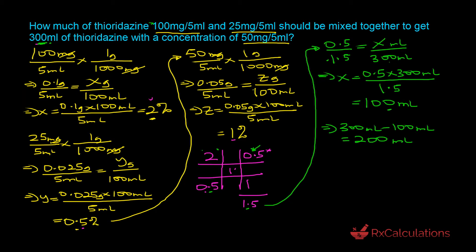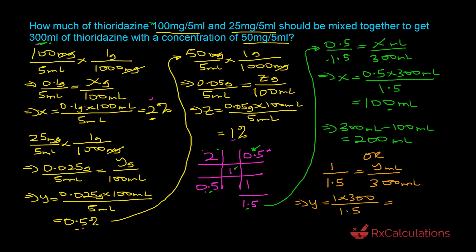Alternatively, to find the volume of the 0.5 percent solution directly: take its parts (1), divide by total parts (1.5), and set equal to y divided by 300 milliliters. Solving, y equals 1 times 300 divided by 1.5, which equals 200 milliliters — confirming our answer. That is how you use the alligation method to solve this question.